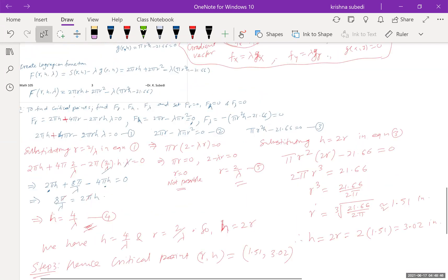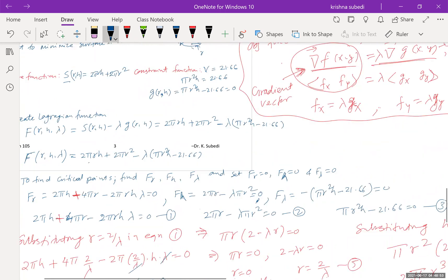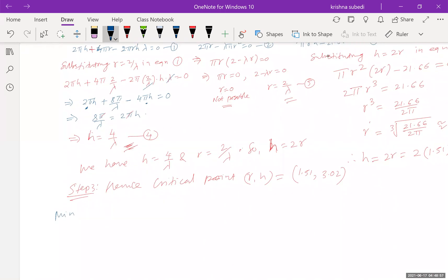And do we need to find the surface area? Find the surface area. We need to find the surface area as well. So you just substitute the value. And so minimum surface area will be S of r and h. The formula that we have written is 2 pi r h plus 2 pi r square. Now S of 1.51 and 3.02 equals 2 pi times 1.51 times 3.02 plus 2 pi times 1.51 square. And then you have the calculator and let me know what is your answer.